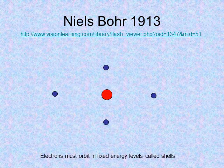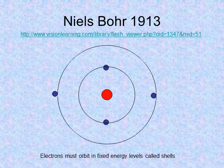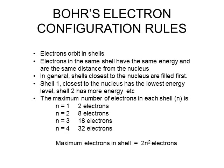The ionisation energies and emission spectra gave strong evidence for the existence of shells. In 1913, Bohr proposed a model in which the atom had a central nucleus, but electrons were not orbiting randomly as Rutherford believed — instead they were in distinct energy levels called shells. Bohr's model was mathematical and stated that electrons in each shell had the same energy, and that the maximum number of electrons per shell is given by 2n², where n is the shell number.